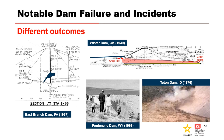Case histories can help teams find potential susceptibilities at a project that make it vulnerable to internal erosion. This training course will examine the incidents at Worcester Dam and East Branch Dam more closely and include others. USACE, Reclamation, TVA, and FERC host a monthly case history webinar series to help share this knowledge.